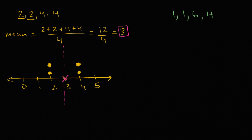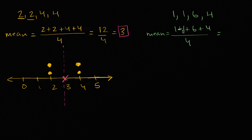Now let's look at the other data set. The mean here equals one plus one plus six plus four, all over four data points. Two plus six is eight, plus four is twelve — twelve divided by four — this is also three. So this also has the same mean, even though we have different numbers.